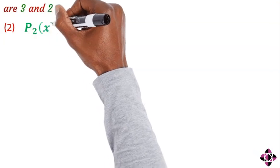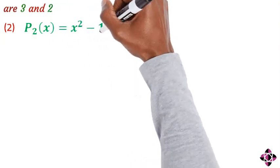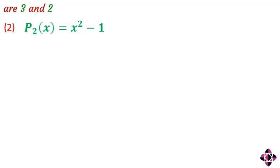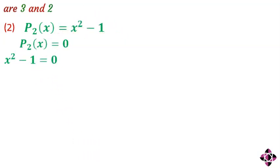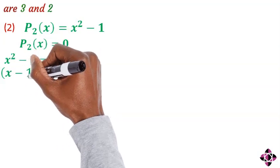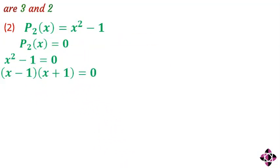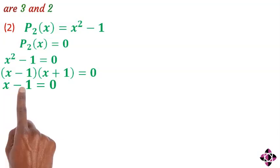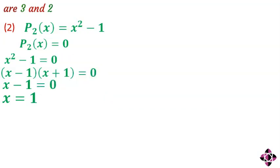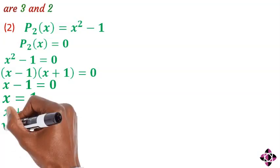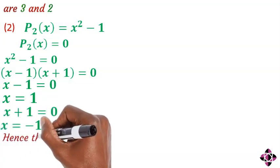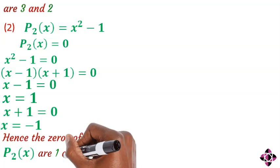Now let's look at p of x equals x squared minus 1. Equating to zero gives x squared minus 1 equals zero. Factorizing gives x minus 1 times x plus 1 equals zero. So x minus 1 equals zero, giving x equals 1; and x plus 1 equals zero, giving x equals minus 1. Hence, the zeros of p of x are 1 and minus 1.